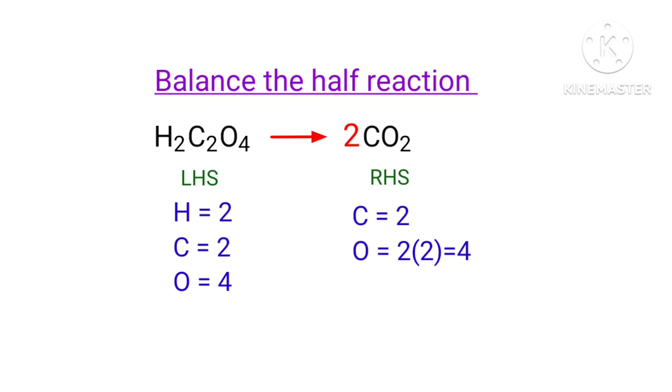Now we need to balance the hydrogen atoms. To do this, we can produce H plus ions. Now the number of atoms are balanced on both sides.